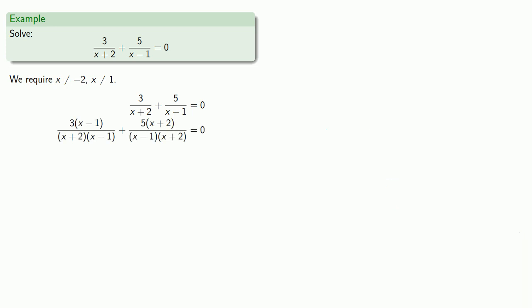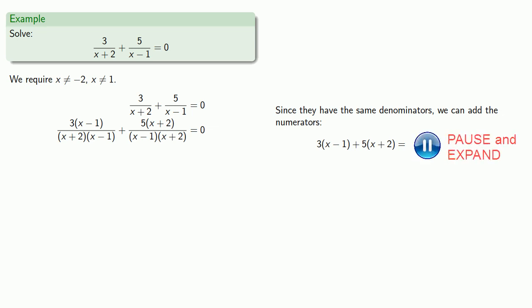Now, since our rational expressions have the same denominators, we can add the numerators. And unfortunately at this point, we do need to expand and multiply to simplify our numerator. So let's take our numerator and expand, and simplify, which gives us our equation.